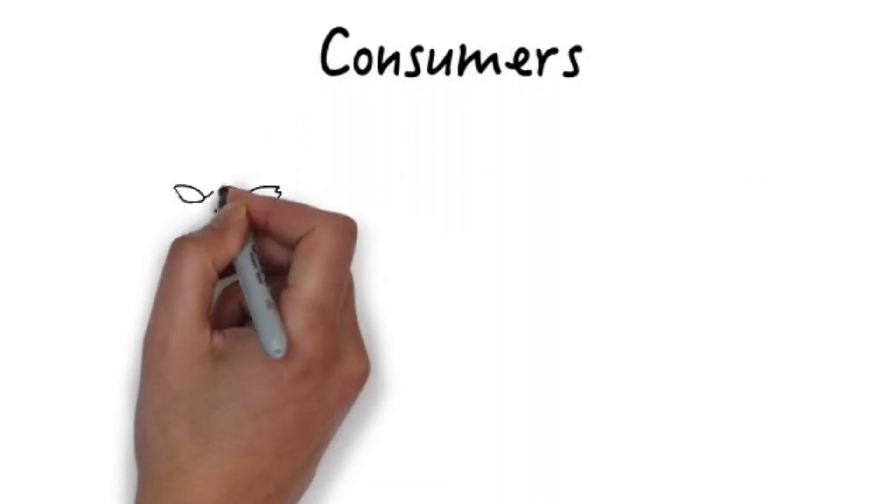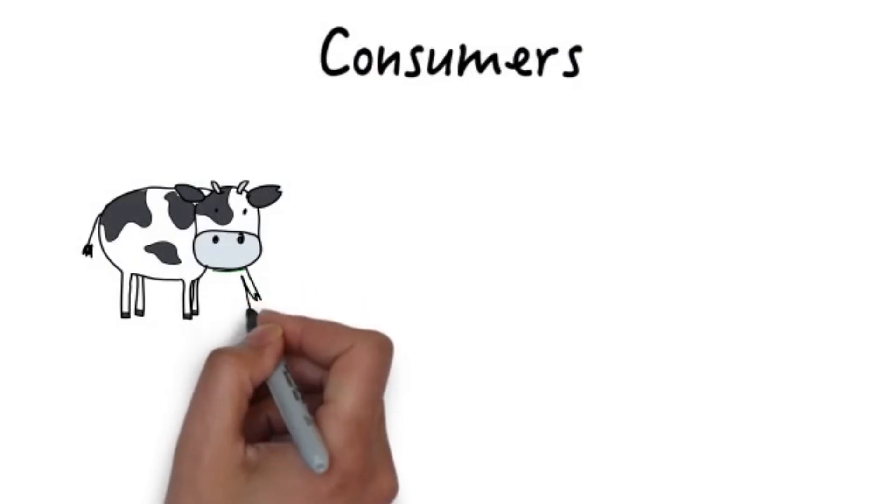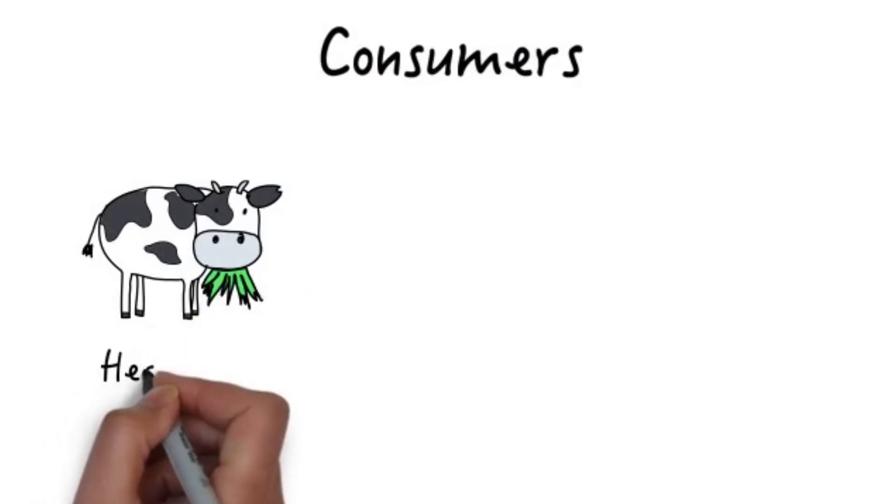Consumers are classified according to what they eat. Herbivores are plant-eating animals. Herbivores usually feed solely on consumers.